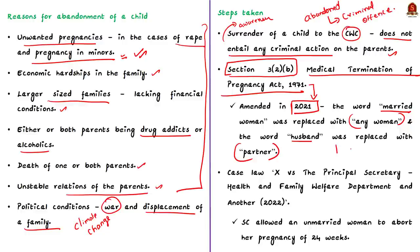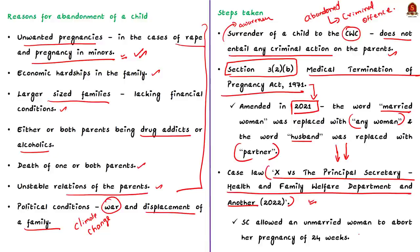This will help in avoiding abandonment of children. This move was reiterated recently by the Supreme Court in the X versus the Principal Secretary, Health and Family Welfare Department, 2022 case law. In this case, the Supreme Court allowed an unmarried woman petitioner to abort her pregnancy of 24 weeks arising out of a failed live-in relationship. These are the two steps taken by the government to prevent abandonment of children in India.